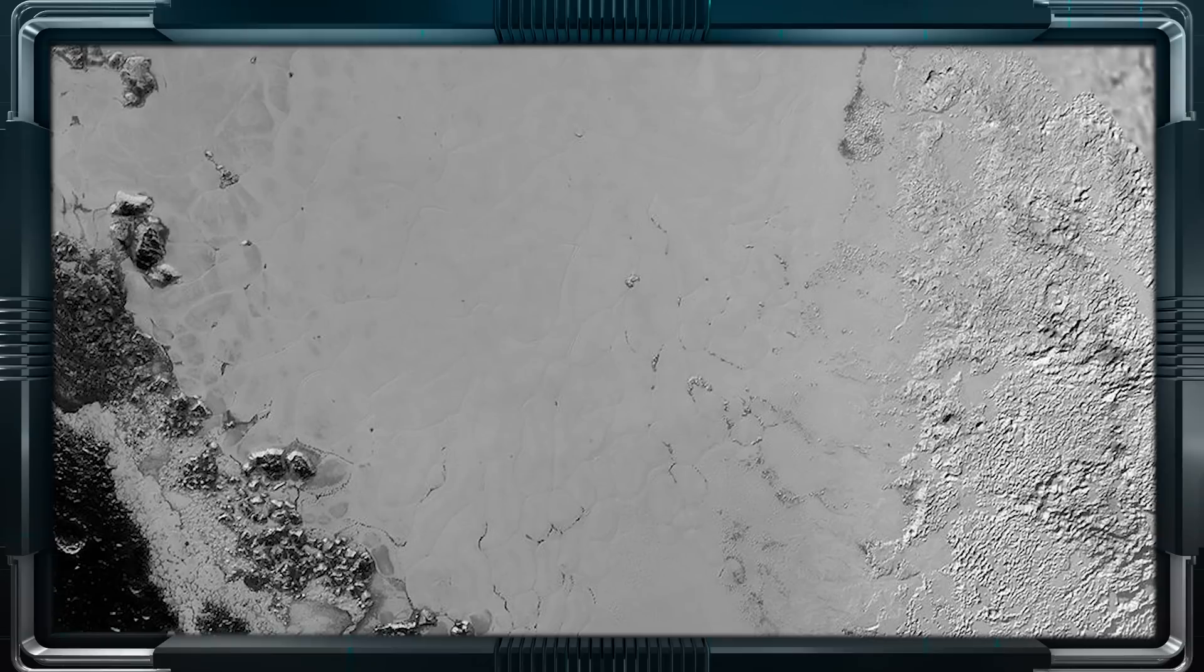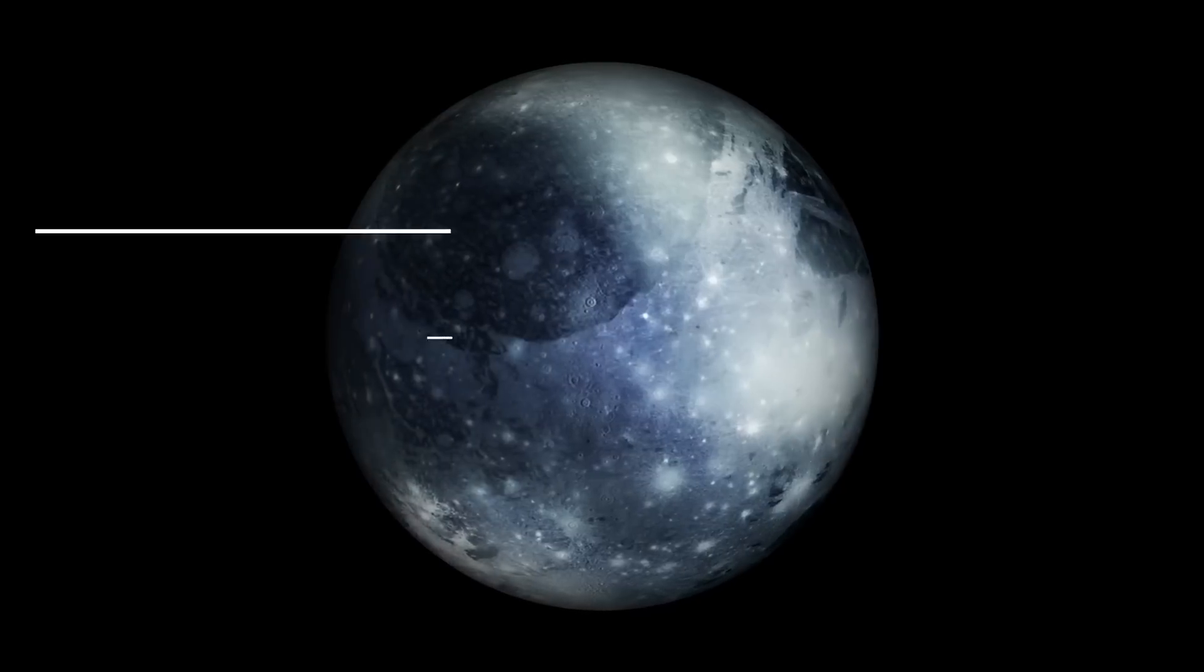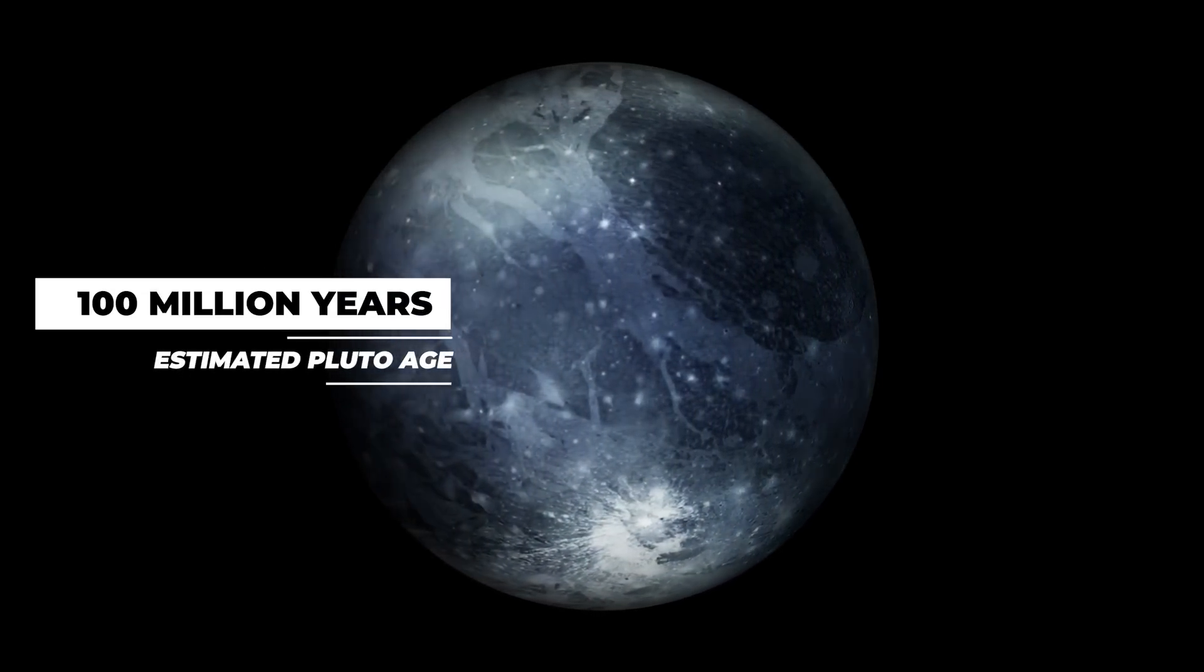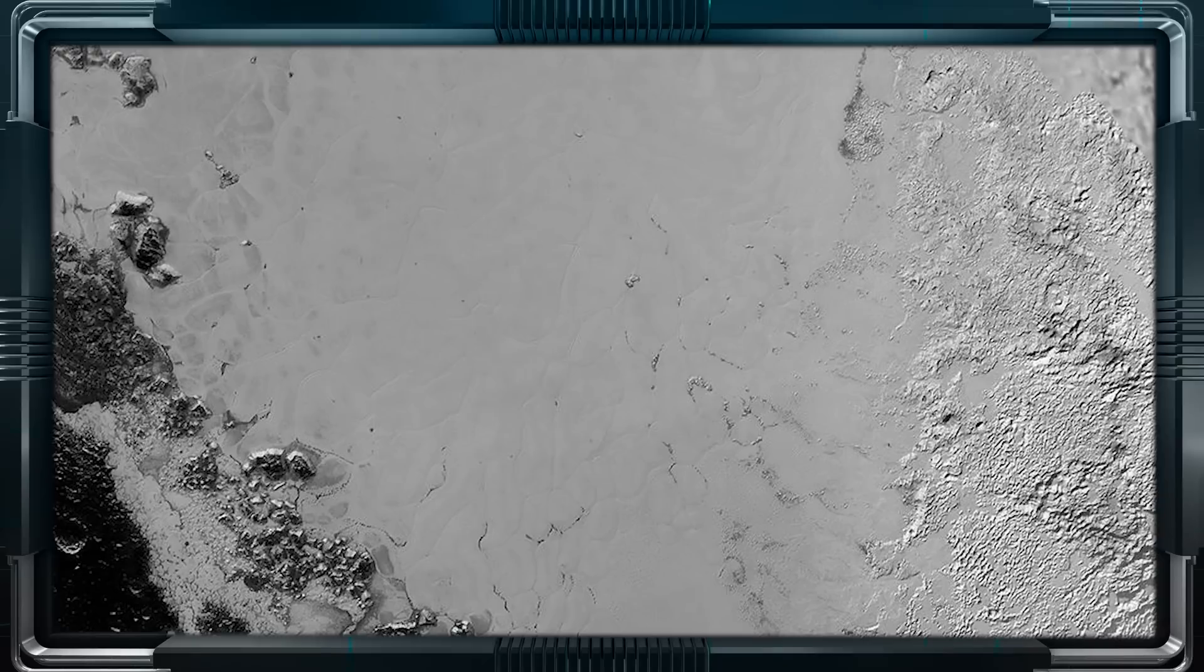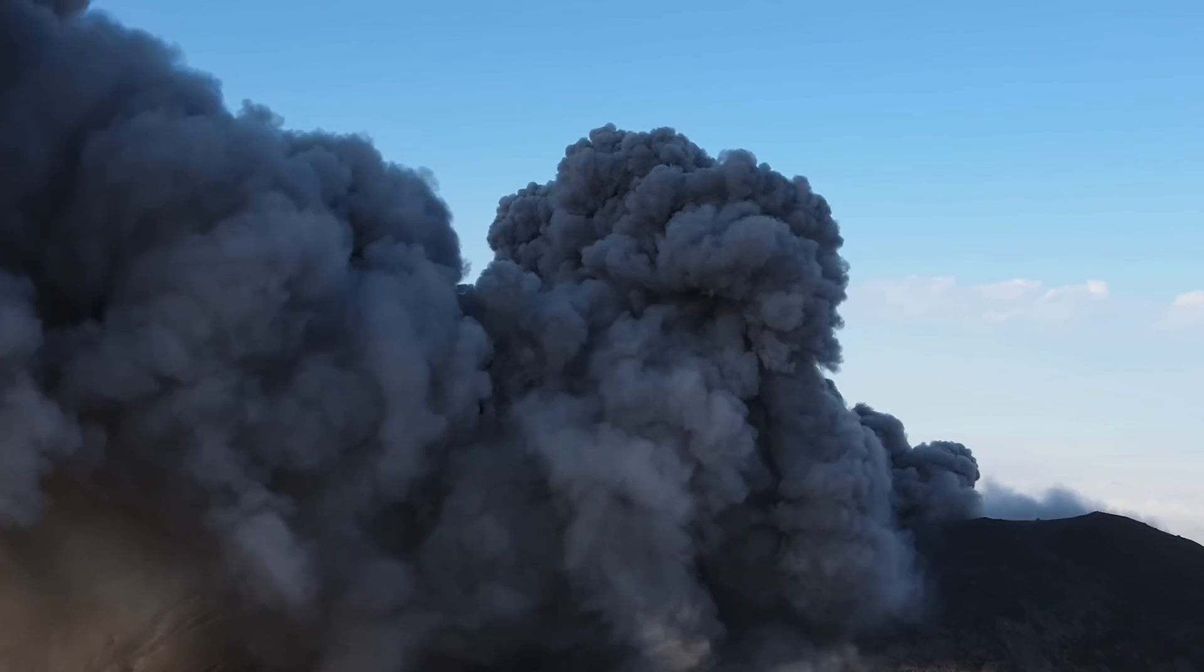The images taken by the New Horizons spacecraft suggest that Pluto is a relatively young planet, with an estimated age of less than 100 million years. NASA scientists have concluded that the Sputnik Planum was formed through geologic processes, as there are no visible meteorite impact craters.